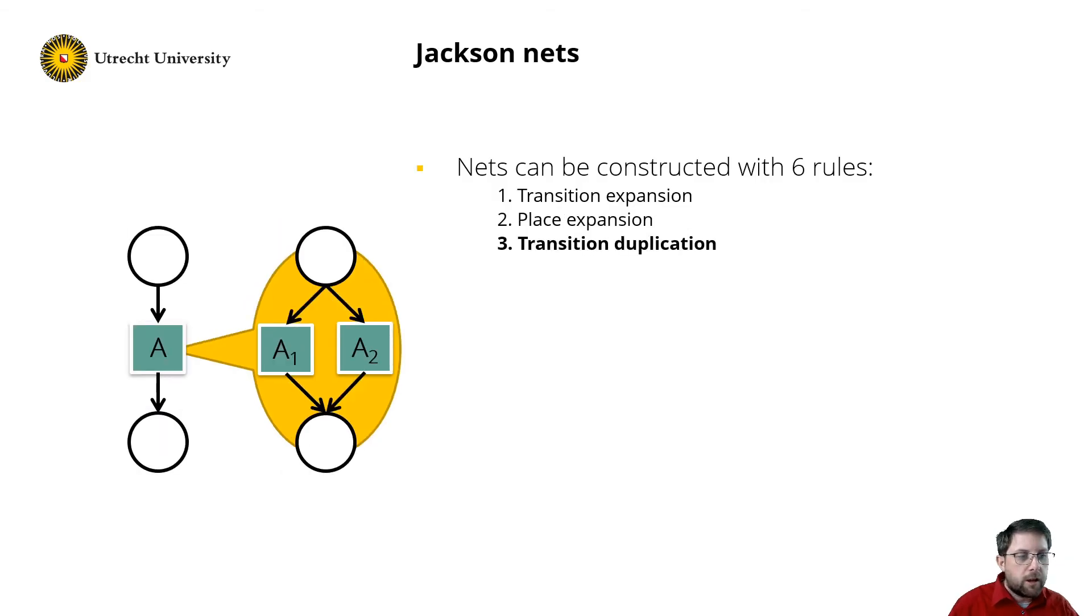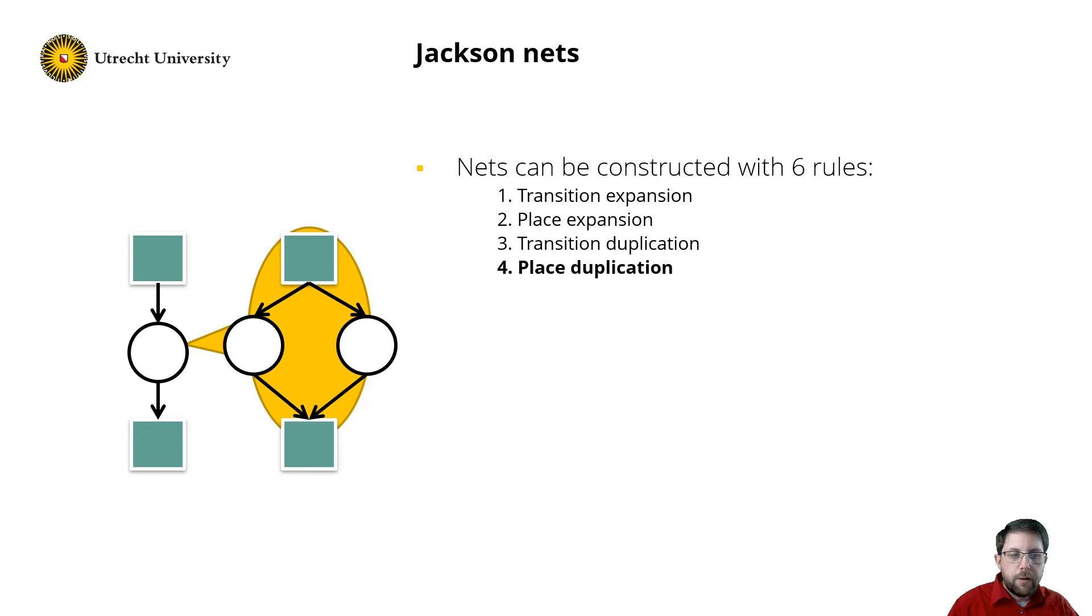The third rule states you can copy a transition. You take the transition and create an exact copy, so it has the same input and output places, like here. Instead of introducing choice, this step introduces concurrency.